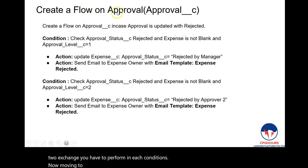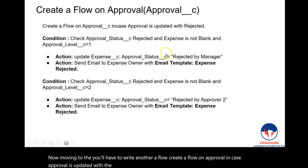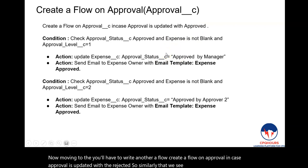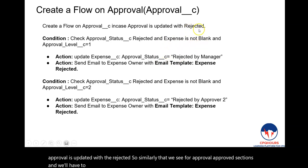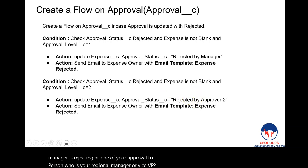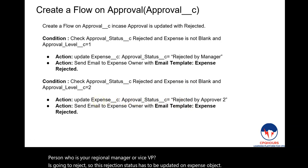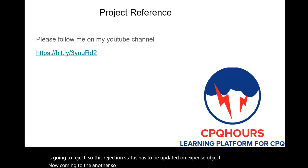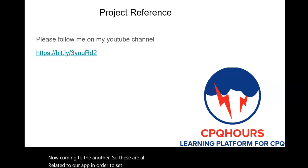Similarly, create a flow on the Approval object to handle rejections. Write conditions for when a manager or regional manager rejects the record, and update the rejection status on the Expense object accordingly. These are all the activities — custom objects, flows, quick actions, and email templates — required to set up your two-level approval system (Level 1 and Level 2) in Salesforce Professional Edition.